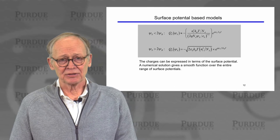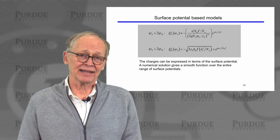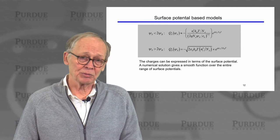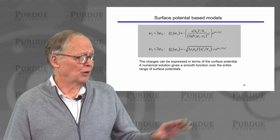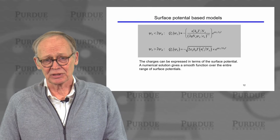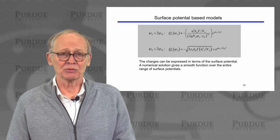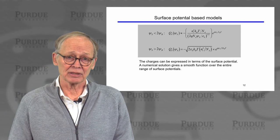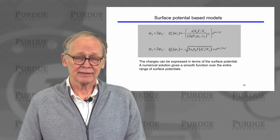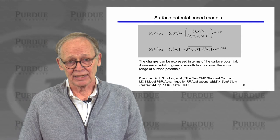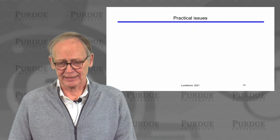Some models today are called surface potential models. Instead of being threshold-based — where we have to connect above-threshold and below-threshold — you know that the IV characteristic is continuous when measured; nothing magic happens at VT, it's just an arbitrary current threshold. If we formulate everything in terms of surface potential, we can get a smooth, continuous curve from below to above threshold. The resulting equations generally need to be solved numerically, but people have developed clever approximate techniques. The PSP model is one example of such a model and is another industry standard model used today.